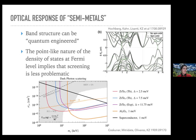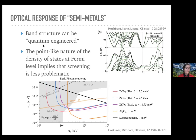One approach is to look for a target with a high density of states but also a weak optical response and a small gap so the process is not kinematically forbidden. This is achievable with semiconductor-like materials called semi-metals, whose band structure can actually be quantum engineered. Condensed matter theorists can compute the band structure of these materials using density functional theory and then engineer the electronic structure to exhibit the types of behaviors useful for dark matter detection.